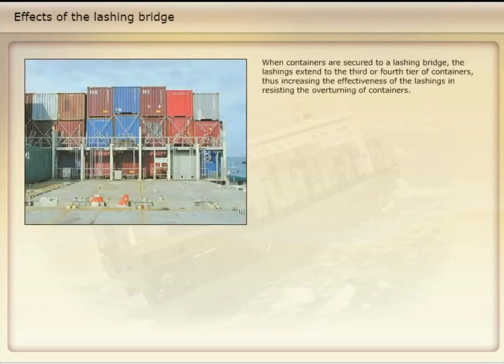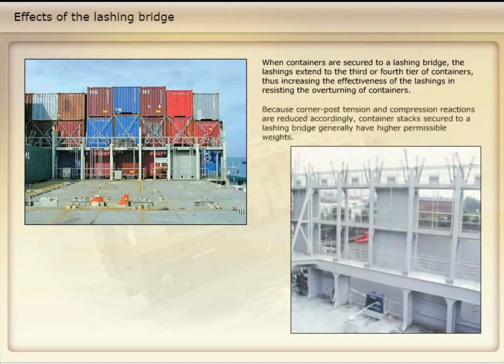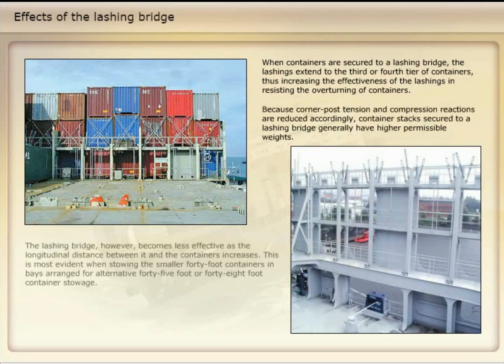When containers are secured to a lashing bridge, the lashings extend to the third or fourth tier of containers, thus increasing the effectiveness of the lashings in resisting the overturning of containers. Because corner post tension and compression reactions are reduced accordingly, container stacks secured to a lashing bridge generally have higher permissible weights. The lashing bridge, however, becomes less effective as the longitudinal distance between it and the containers increases.